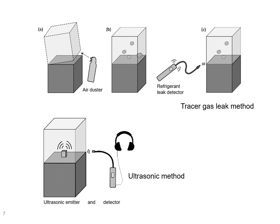When you don't see a visible gap, you could use instruments to help you — either the tracer gas leak method or the ultrasonic method. With the tracer gas method, you use a spray can air duster to shoot some gas into the cases, close the case, wait a little bit, and then with a refrigerant leak detector, try to detect where the gas is leaving. The other method is the ultrasonic method: you put an ultrasonic emitter inside the cases, and your instrument — an ultrasonic detector — localizes where the sound is leaving the cases.